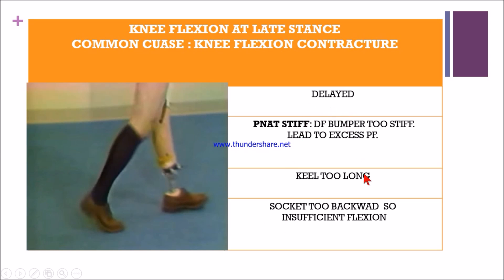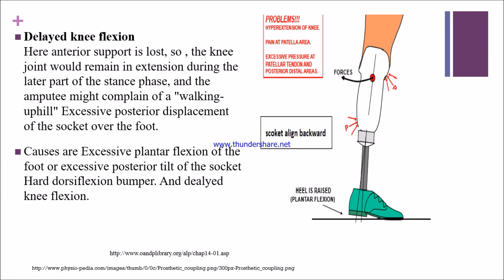In delayed knee flexion at late stance, anterior support is lost and the knee remains in extension during the later part of stance phase. The patient may complain of problems with uphill walking. Excessive posterior displacement of the socket causes hyperextension of the knee and excessive pressure at the patellar tendon area and posterior distal area, which delays knee flexion.